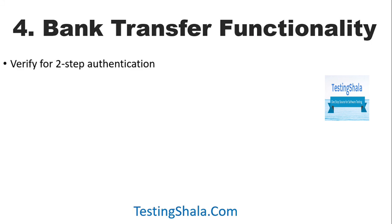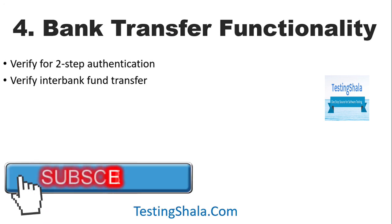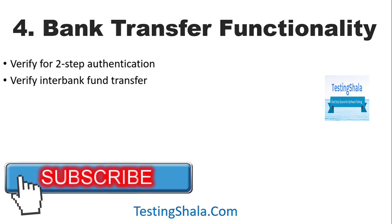Once the user puts in all the information and clicks transfer, it should trigger a second-step authentication — an SMS OTP sent to the person who is transferring the amount. After entering the OTP, the transfer should be completed. Transfer can happen within the same bank, from a different bank within the city, or outside the city. All those validations should be performed to ensure all functional test cases are passing.